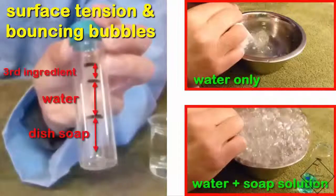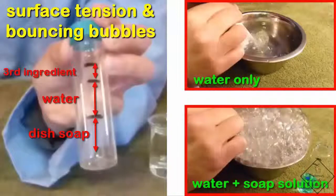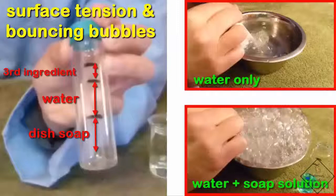Dr. Smith is adding equal parts of dish soap and water to a container. To increase the lifetime of the bubbles, he is also adding a third ingredient, glycerin or light corn syrup.